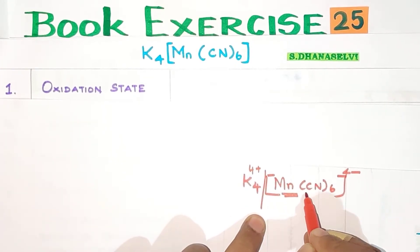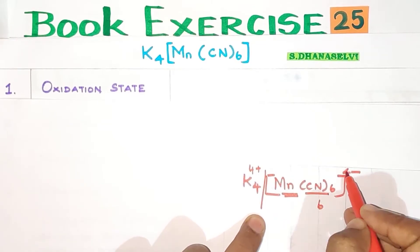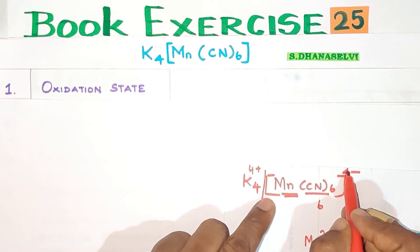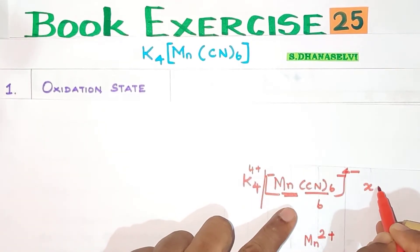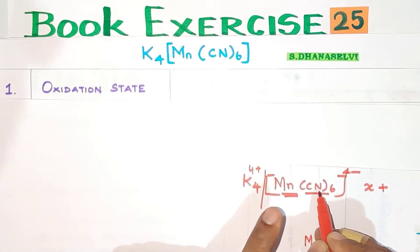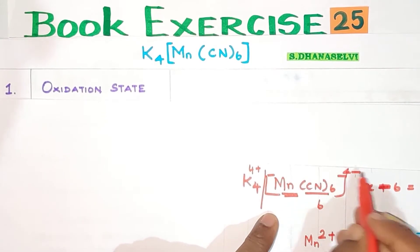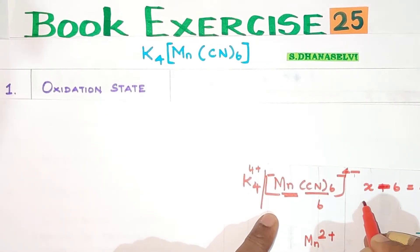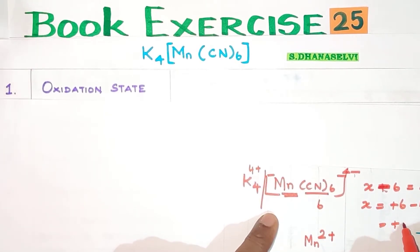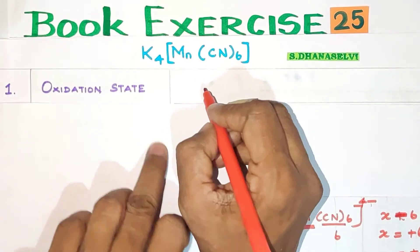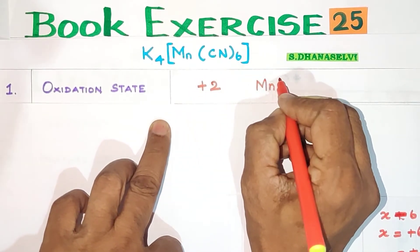Now we find the charge on manganese. There are 6 CN- ligands, each with a charge of -1, so 6 ligands give -6. Setting up the equation: x + (-6) = -4, so x = +2. Therefore, the oxidation state of manganese is +2, that is Mn2+.